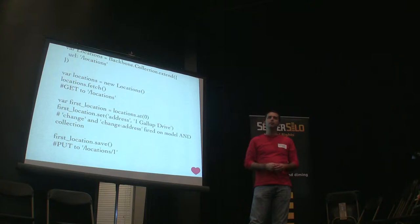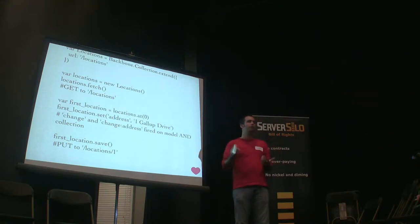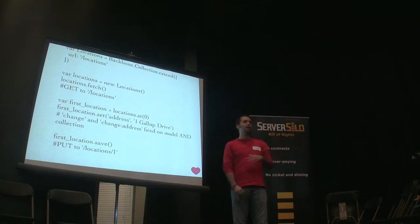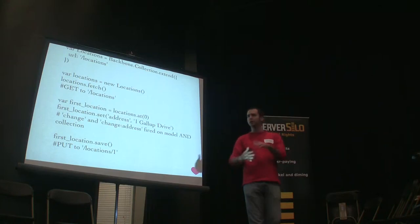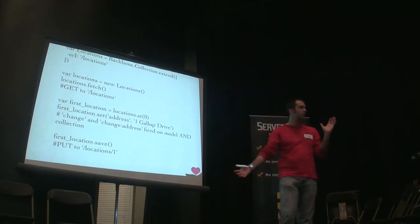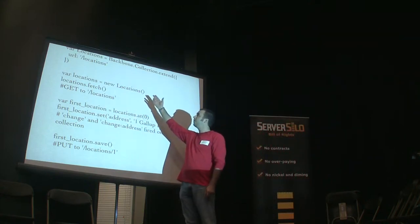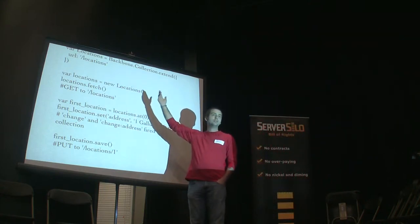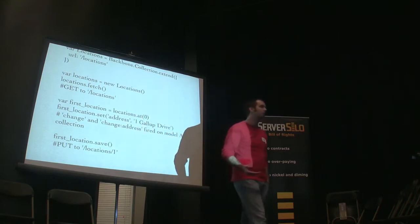So let's say I've got a collection of videos and whenever anything changes on one of those, I just want to update the whole list. I can listen to change events on my collection, and any event that happens on the model will automatically get fired on the collection so I can just update my whole view. And because I specified the URL in a collection, any models belonging to that collection know where to save their data — so you don't have to duplicate that information.